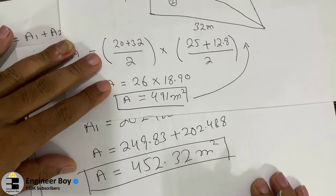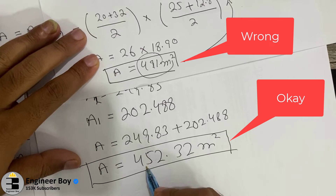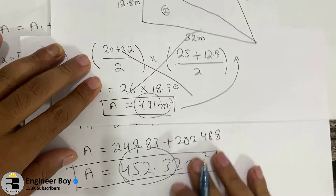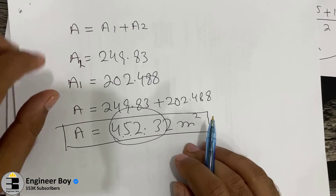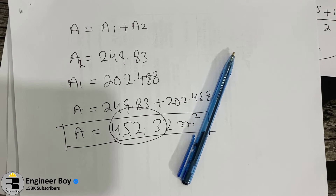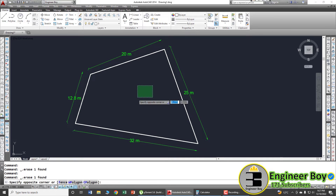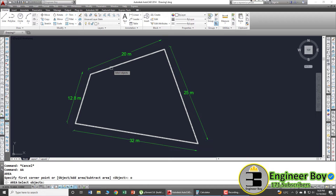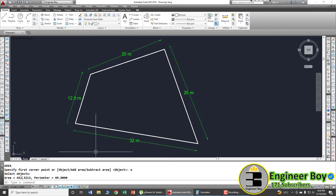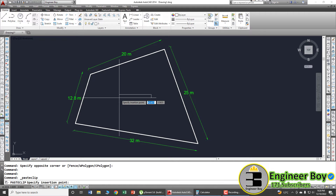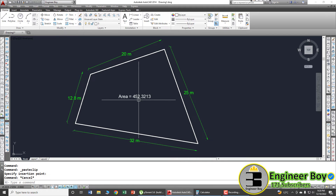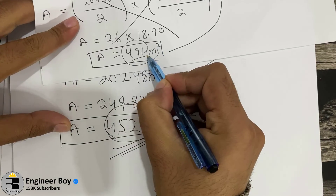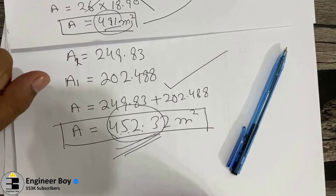Comparing the two methods: the average method gave 491 square meters, while the exact Hero's formula gives 452 square meters. The average method is wrong — never use it. To verify, I opened the same diagram in AutoCAD, typed 'AA' then 'O' in the command bar, clicked the property boundary, and the area shown is 452 square meters — confirming our Hero's formula result. Use Hero's formula; it is 100% accurate.